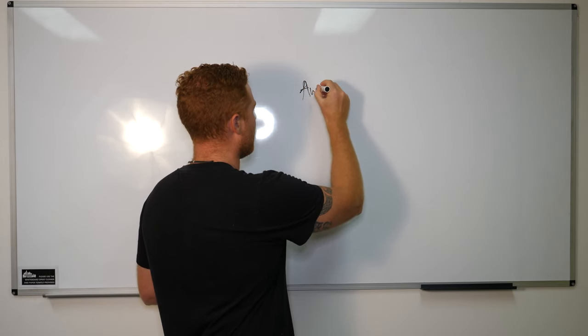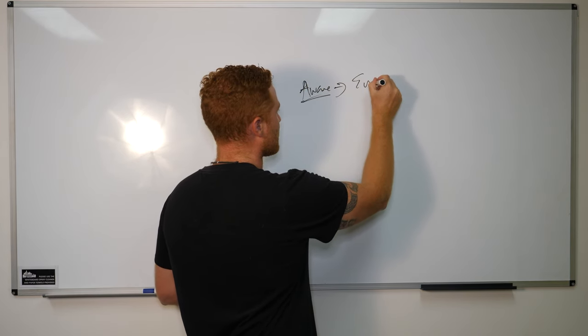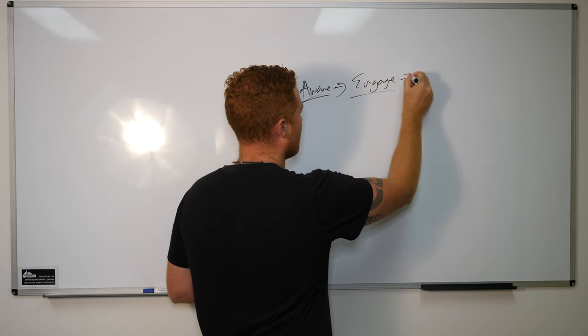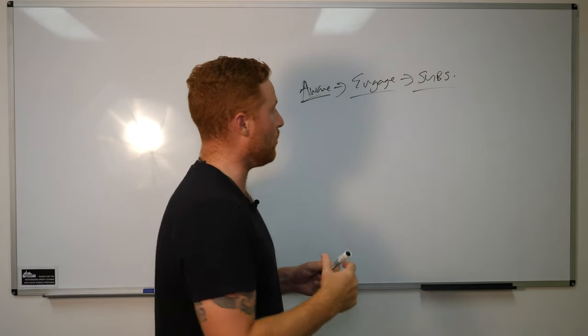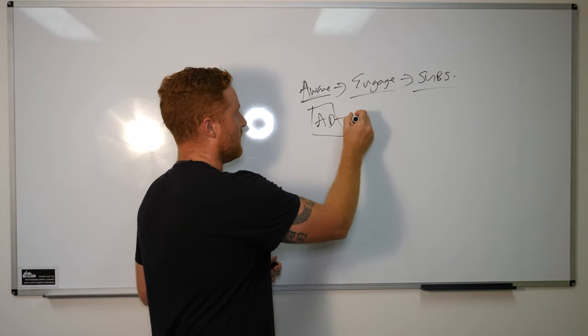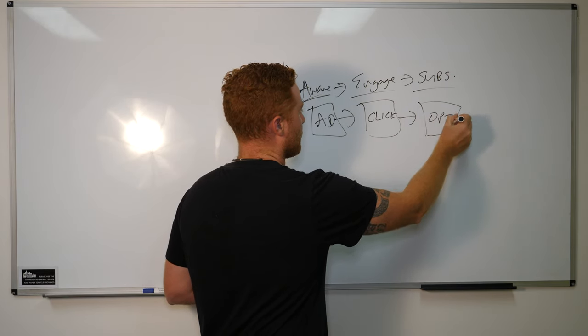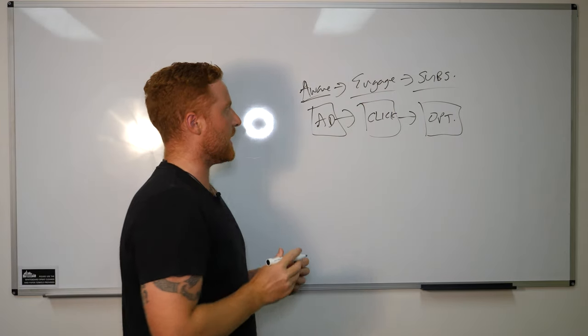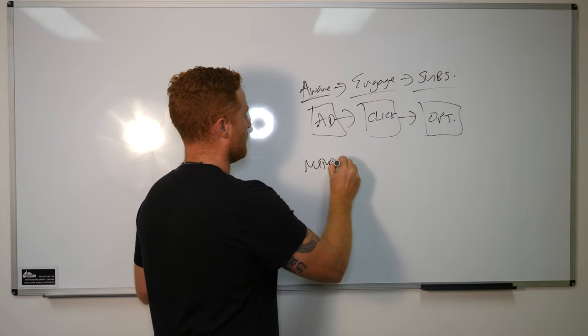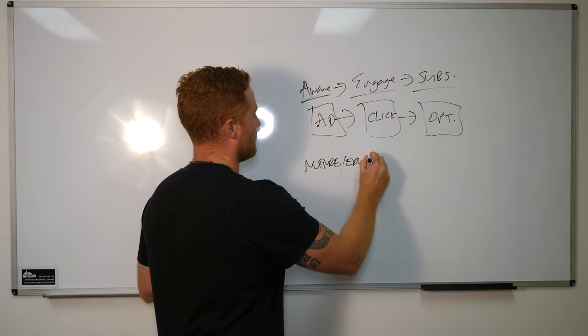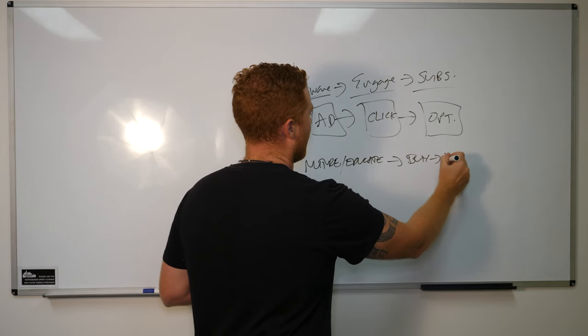So first, we have to understand the customer journey. It starts off at the beginning here where someone becomes aware. After they become aware of who you are, they then decide to engage with you. They then become a subscriber. Now, most of us know this, and the old way was to write an ad to have them click and then have them opt in. Now, once they subscribed and they opted in, this then allowed us to then move them down here to nurture slash educate, and then to turn them into a buyer and then a happy client.